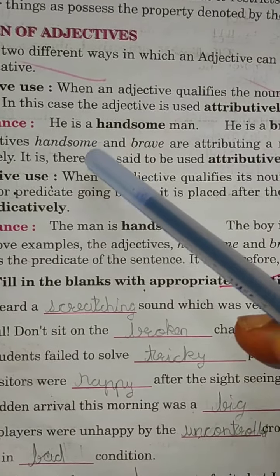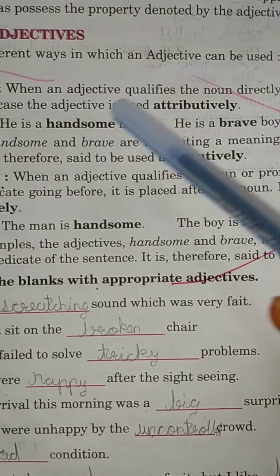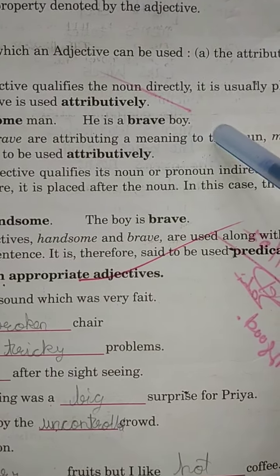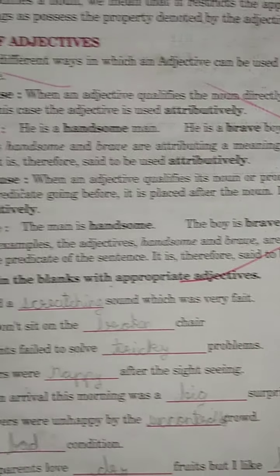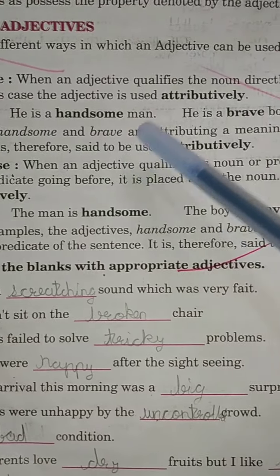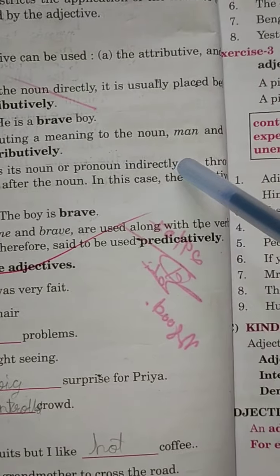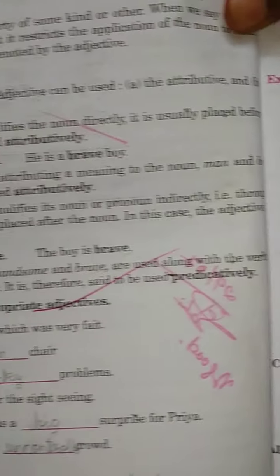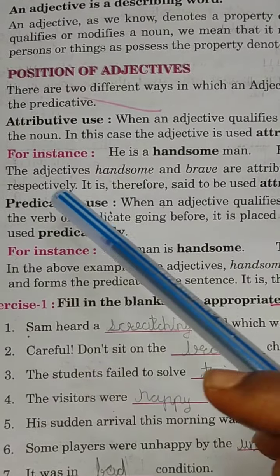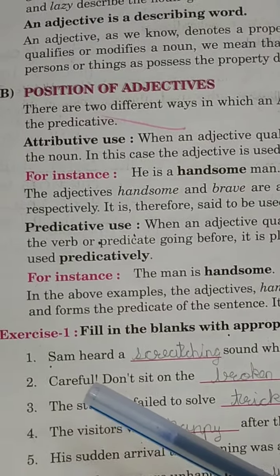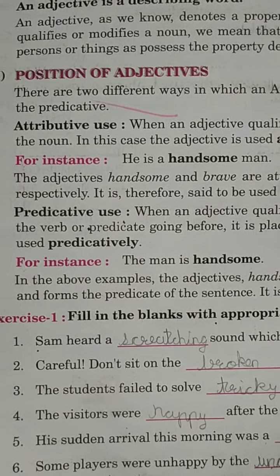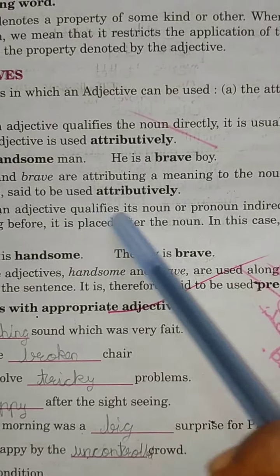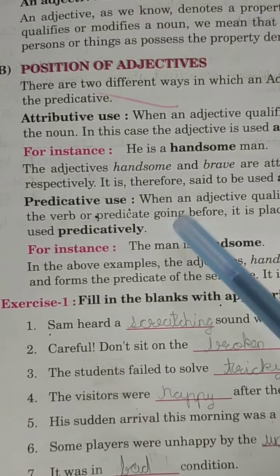For instance: 'He is a handsome man' — woh kaisa hai, handsome hai. 'He is a brave boy' — woh kaisa hai, brave ladka hai. The adjectives 'handsome' and 'brave' are attributing a meaning to the nouns 'man' and 'boy' respectively. It is therefore said to be used attributively — means directly use hue hain.